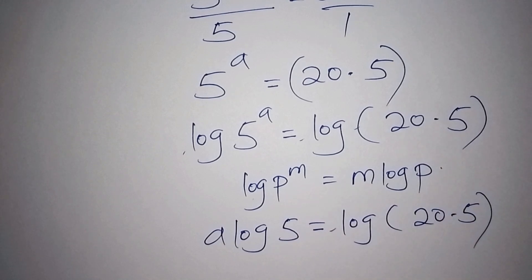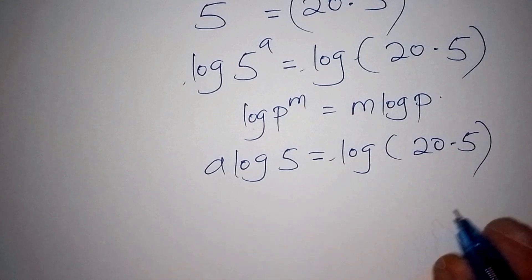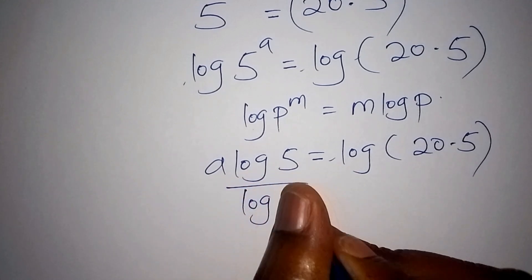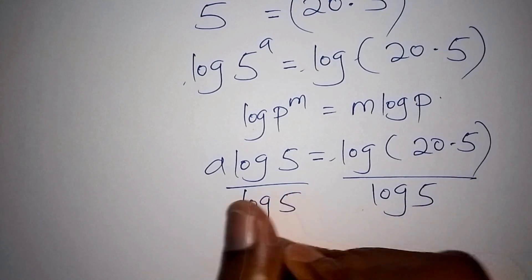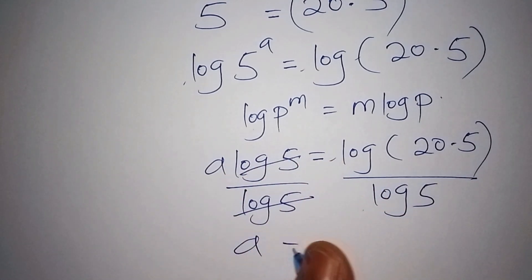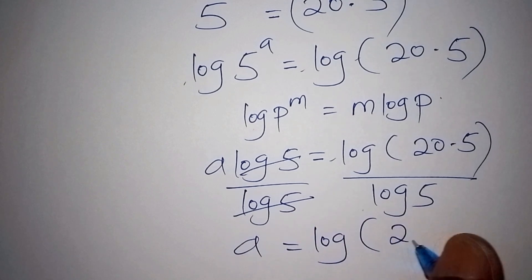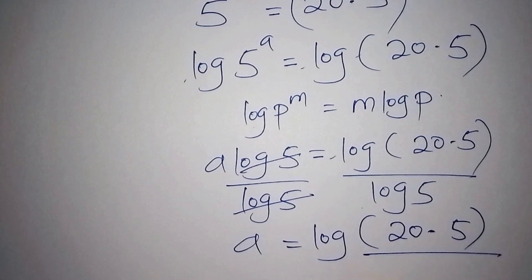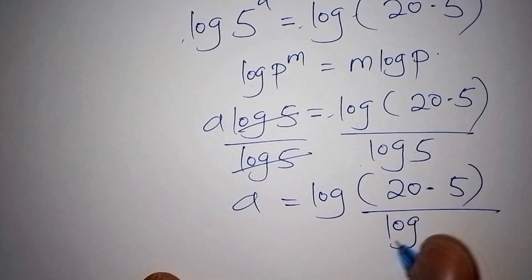To isolate a, we divide both sides by log of 5. Log 5 and log 5 cancel each other, so a equals log of 20 multiplied by 5, all over log of 5.